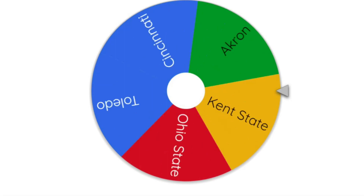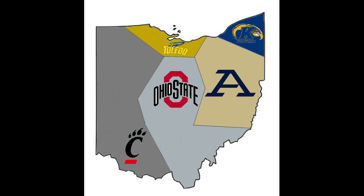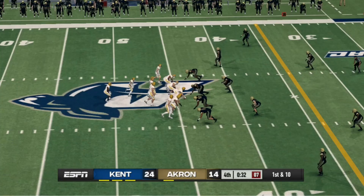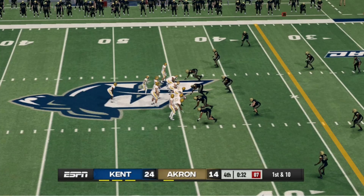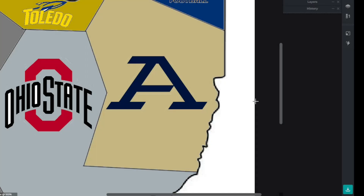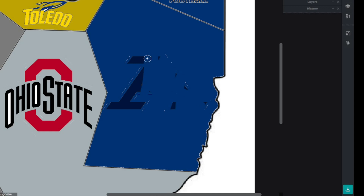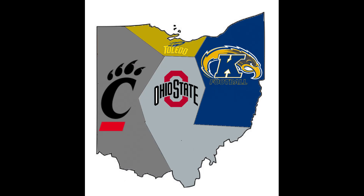Let's see which one of these teams is going to be up next. The wheel slows down and it looks like it's going to be Kent State for the first time. Kent State can only play the University of Akron, and they're going to go into Akron and knock off LeBron James' hometown 24 to 14. They just take over and now we're down to four.